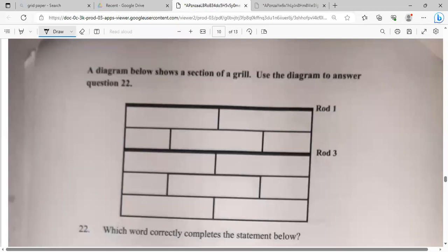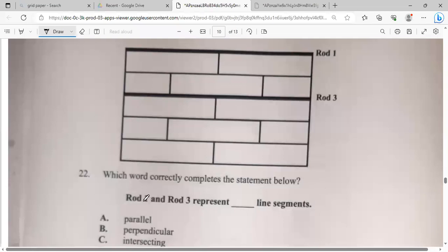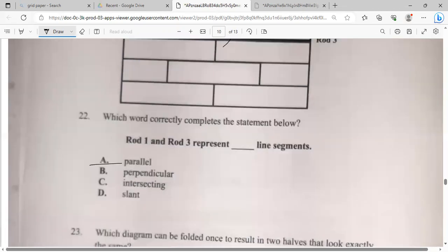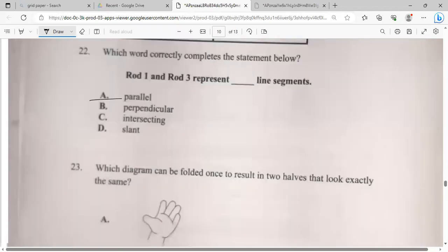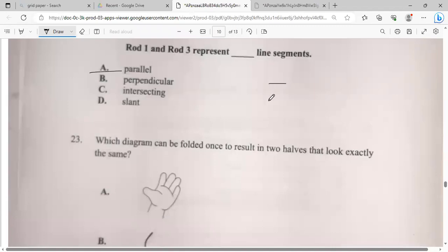A diagram below shows a section of a grill. Use the diagram to answer question 22. Which word correctly completes the statement below? It says rod 1 and row 3, which is this, represent. And they are going in the same direction. They will never meet. So they are parallel lines. Parallel lines, they never meet. Perpendicular means they meet at right angle.